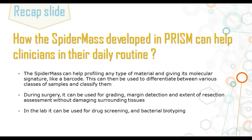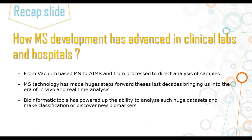To recap how SpiderMass developed at PRISM can help clinicians in their daily routine: it can analyze any type of material and provide its molecular signature like a barcode, which can be used to differentiate between various classes of samples and classify them. During surgery, it can be used for grading, margin detection, and even extent of rejection assessment without damaging surrounding tissues. In the lab, it can be used for drug screening, bacterial biotyping, and other non-clinical applications like pesticide analysis or food safety.